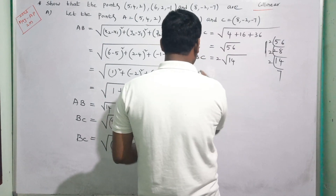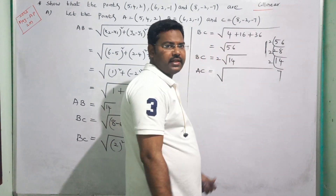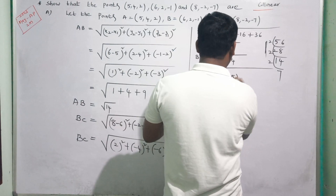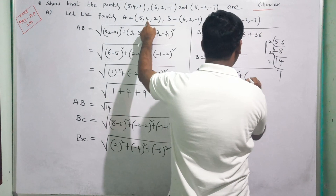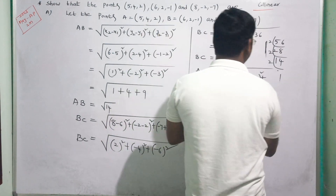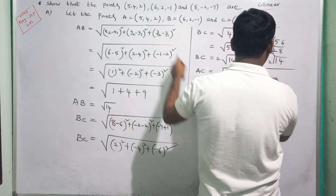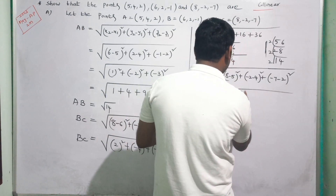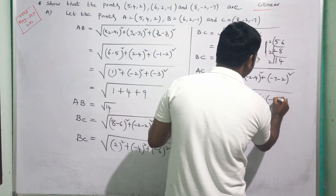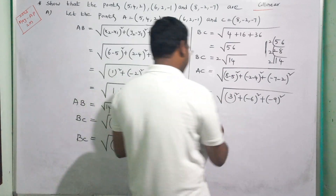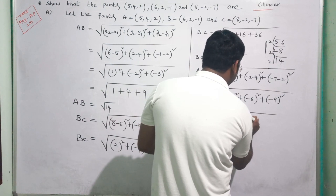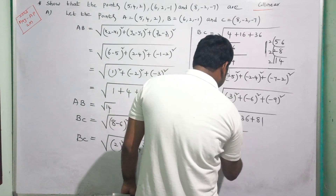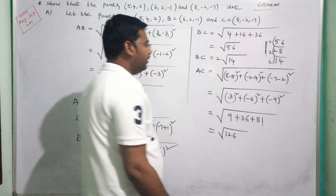Distance AC equals square root of (8 minus 5) squared plus (-2 minus 4) squared plus (-7 minus 2) squared, which equals square root of 9 plus 36 plus 81, equals square root of 126. Using the LCM method, square root of 126 equals 3 root 14.